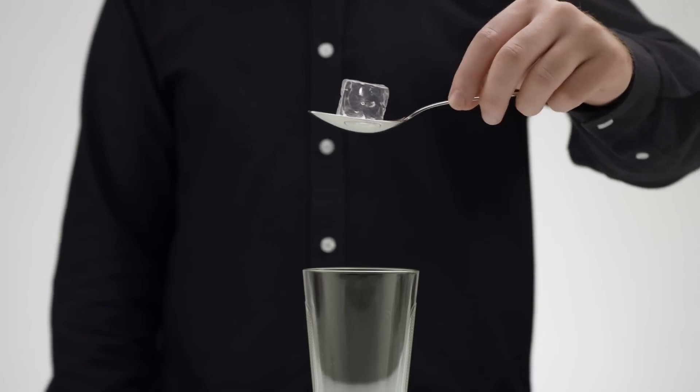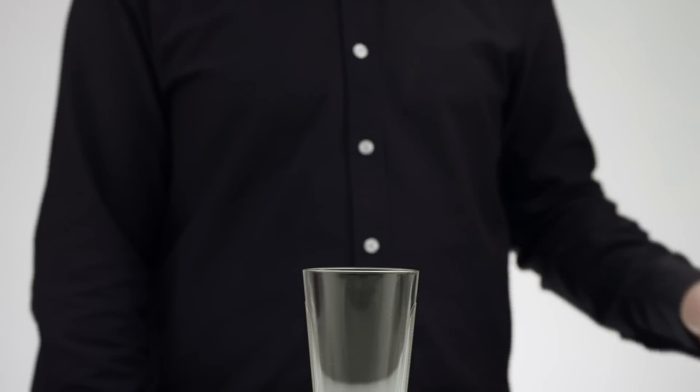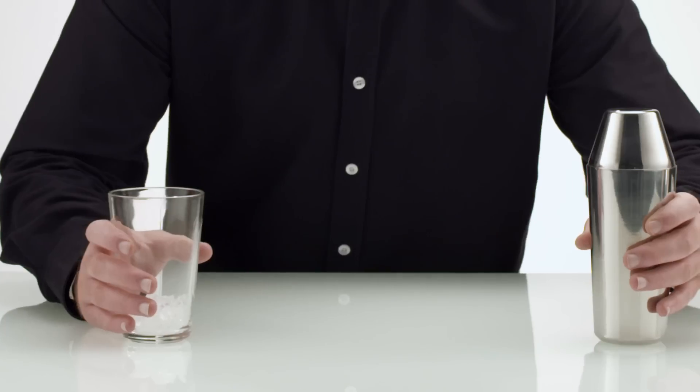Put one tablespoon of crushed ice in a tall recipe glass. Then add the contents of the shaker.